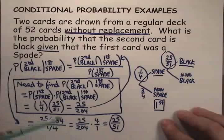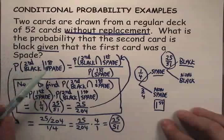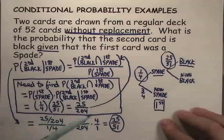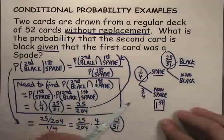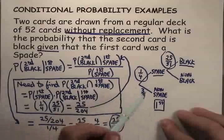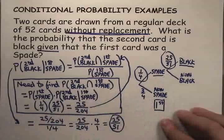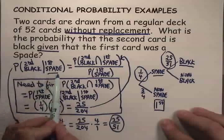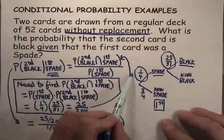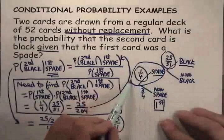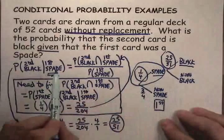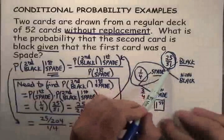Notice that even though I went through the calculation and used all my formal rules, if you get good enough with this process, you'll learn there are ways to shortcut your work. When I've been given that the first one's a spade, that means I've headed up this branch of the tree. So the probability that the second one is black given that fact is simply that probability sitting right there.